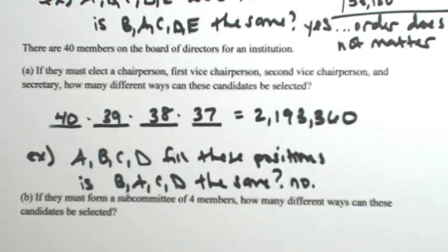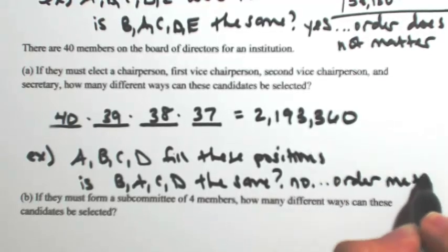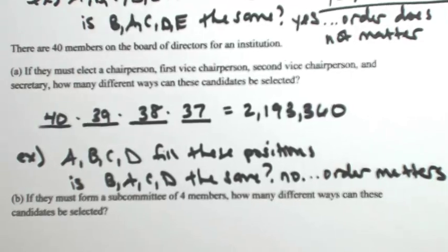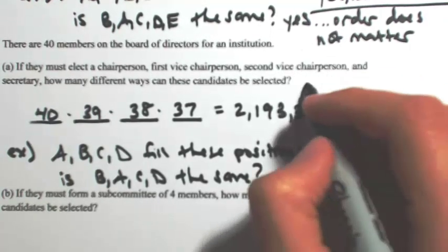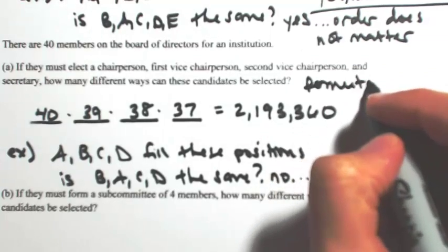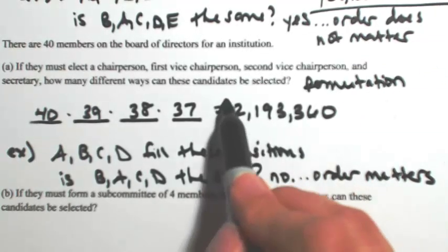By switching those two, you switch the position. So you end up with something different. So the order matters. The order in which these people were selected and elected to their position matters. So this is an example of a permutation. So there are no repeats. We don't need to divide by anything.